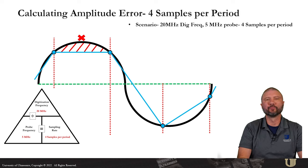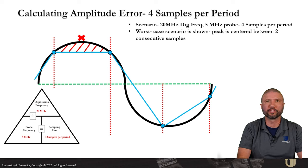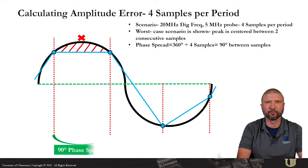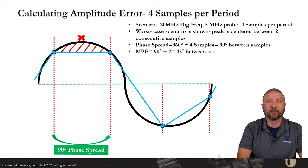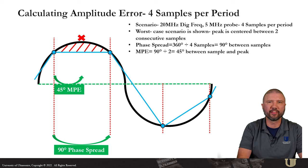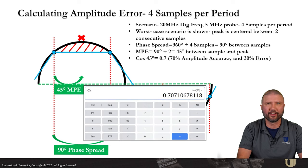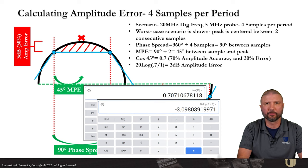Let's look at another scenario. 20 MHz digitizing frequency, 5 MHz probe resulting in four samples per period. The worst case scenario is shown where the peak is centered between two consecutive samples. My phase spread can be calculated to 90 degrees between samples. And if I divide that by two, I've got 45 degrees between the sample and the peak. Cosine of 45 is 0.7, which means we have 70% accuracy, 30% error. And then if I convert that to a dB, I can show three dBs of amplitude error.